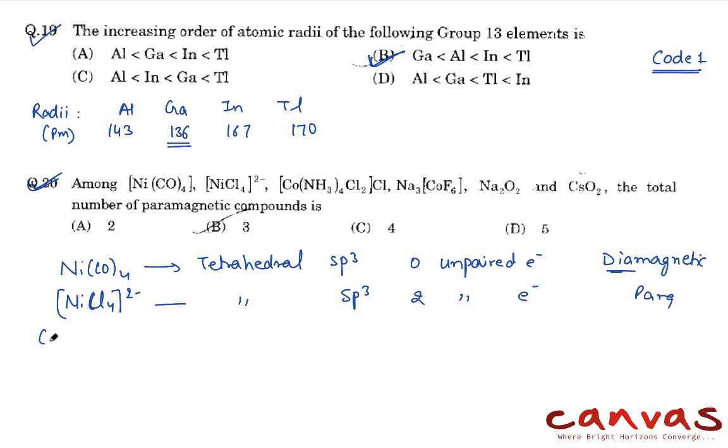Then coming to the tetramine complex. This case is octahedral sp3d2 or d2sp3 because inner orbitals will be involved. This will also be, because of the strong field ligand ammonia, there will be pairing. So zero unpaired electrons, again diamagnetic.